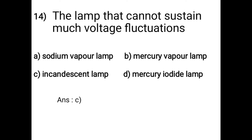Question 14: The lamp that cannot sustain much voltage fluctuations: A - sodium vapor lamp, B - mercury vapor lamp, C - incandescent lamp, D - mercury iodide lamp. The answer is option C: incandescent lamp. The lamp that cannot sustain much voltage fluctuations is the incandescent lamp.